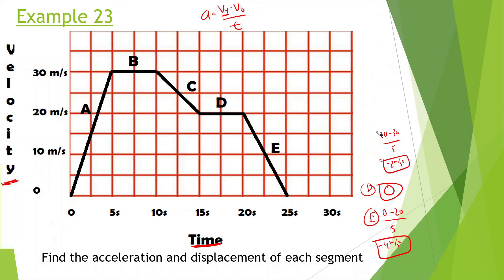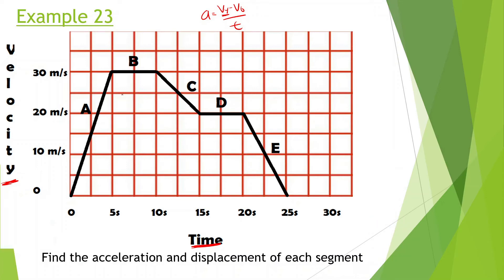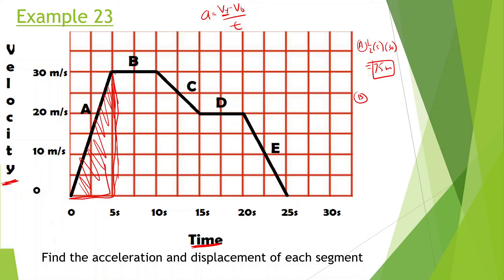Now we're going to find the displacement of each segment. The displacement is found using the area under the curve of the velocity versus time graph. For segment A, it's a triangle: one half times base 5 times height 30 equals 75 meters. For part B, moving at constant velocity, the area is just 30 times 5 equals 150 meters.